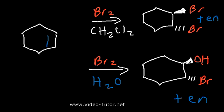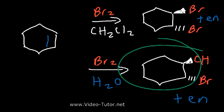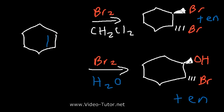Now let's talk about the mechanism. This product, by the way, is known as the halohydrin. Let's go over the first mechanism between the alkene and bromine in dichloromethane to understand how it works, and then we can see how the halohydrin forms.